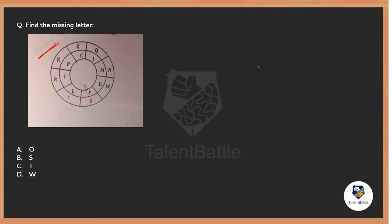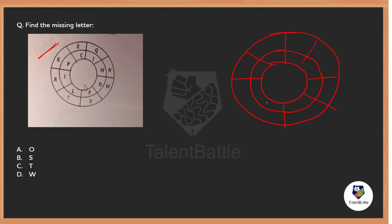Now let's start with this question. Many of you what you do is you start writing the figure — you will just write to replicate the image, drawing the lines and then writing C, J, M, D, W, F and all. This is actually time-consuming. What you are going to do is a time-based process. Whenever there is a question, try not to replicate the same because you are wasting your time. Whenever there are alphabets, never go with alphabets alone — try to convert them into numbers because coding and decoding is always all about the numbers.